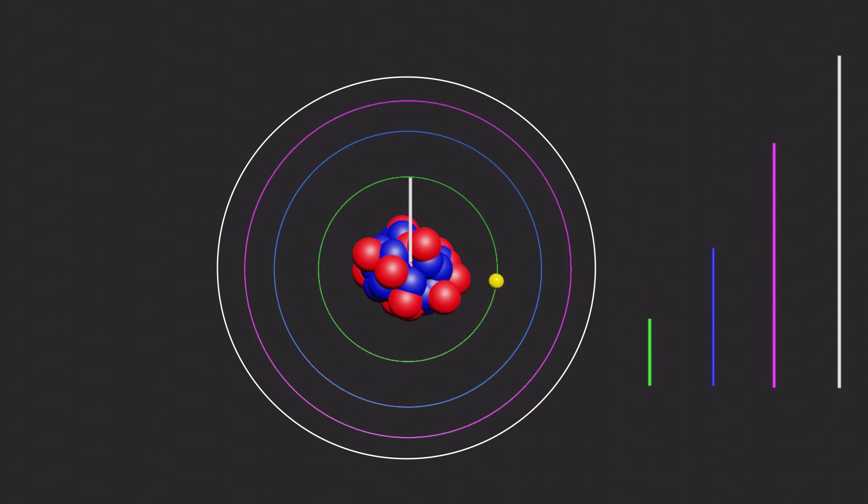The radius of an allowed orbit can be found using the relation r = n²r₀, where n is an integer representing the energy level and r₀ is a constant representing the radius of the first energy level.